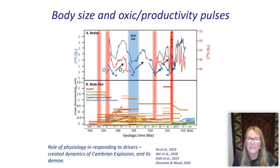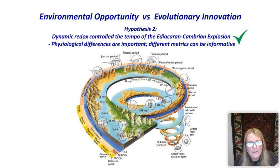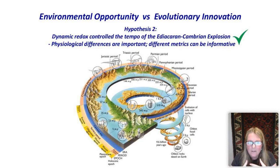These groups are possibly responding to some sort of oxic and productivity pulses in the shallow marine environment, responding by these very dynamic changes in body size and changing rates of origination. Everything was knocked out by the Sinsk event — we lose this coupling of carbon and sulfur isotopes as we enter a very dominant anoxic world. I think we've shown that dynamic redox really did control the tempo of this Ediacaran and Cambrian explosion. But physiology is very important — physiological differences may actually be giving us the nature of our record, and our choice of metrics and how we interrogate this is very important.